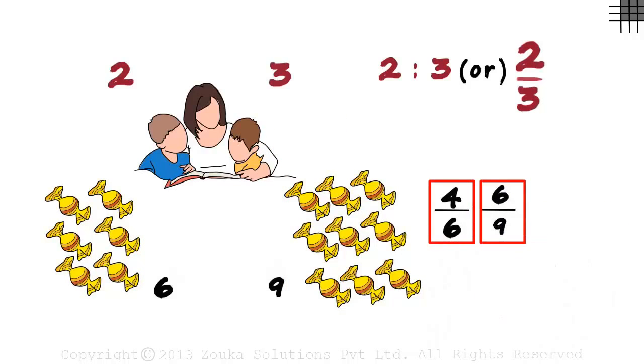Both these ratios when simplified will give us 2 by 3. In every case, the ratio has remained the same. What does this mean?